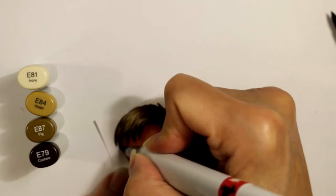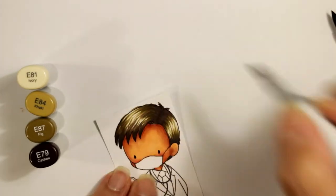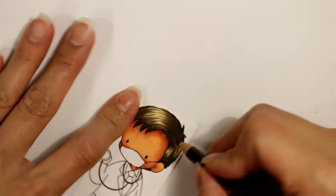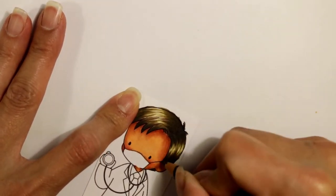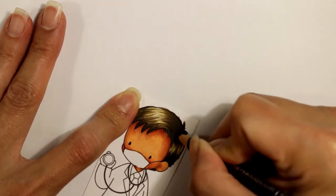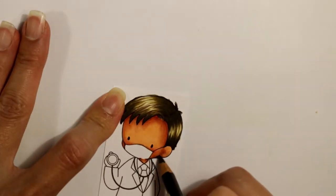And I go back in and reemphasize with the darkest, that E79, where the part is. And I decided I was going to add even a little bit more detail and texture with this Prismacolor pencil.